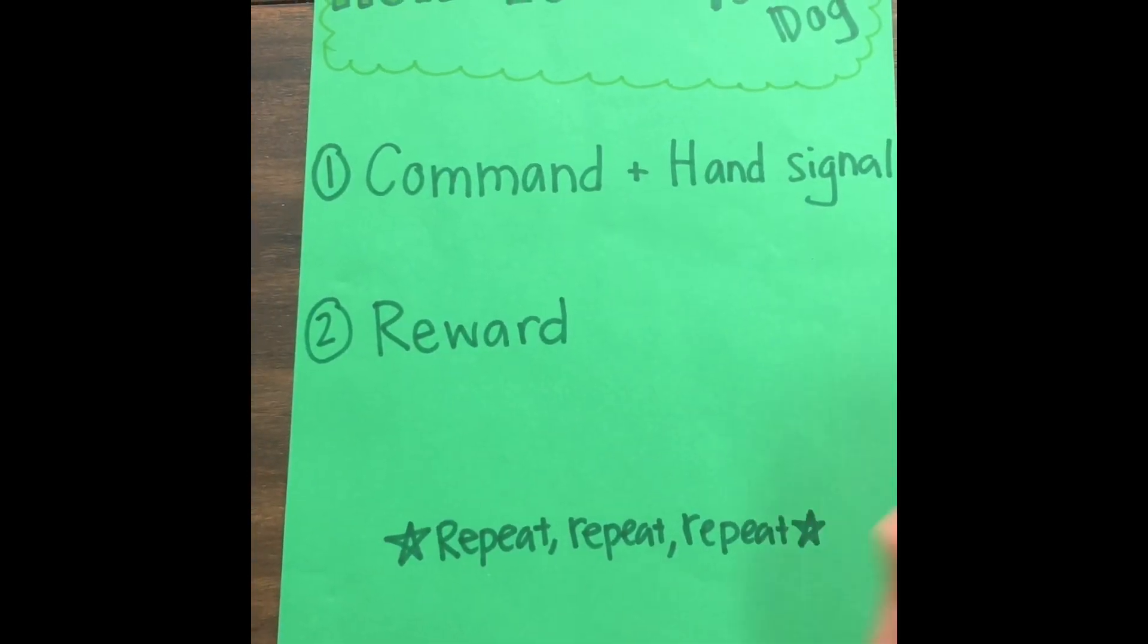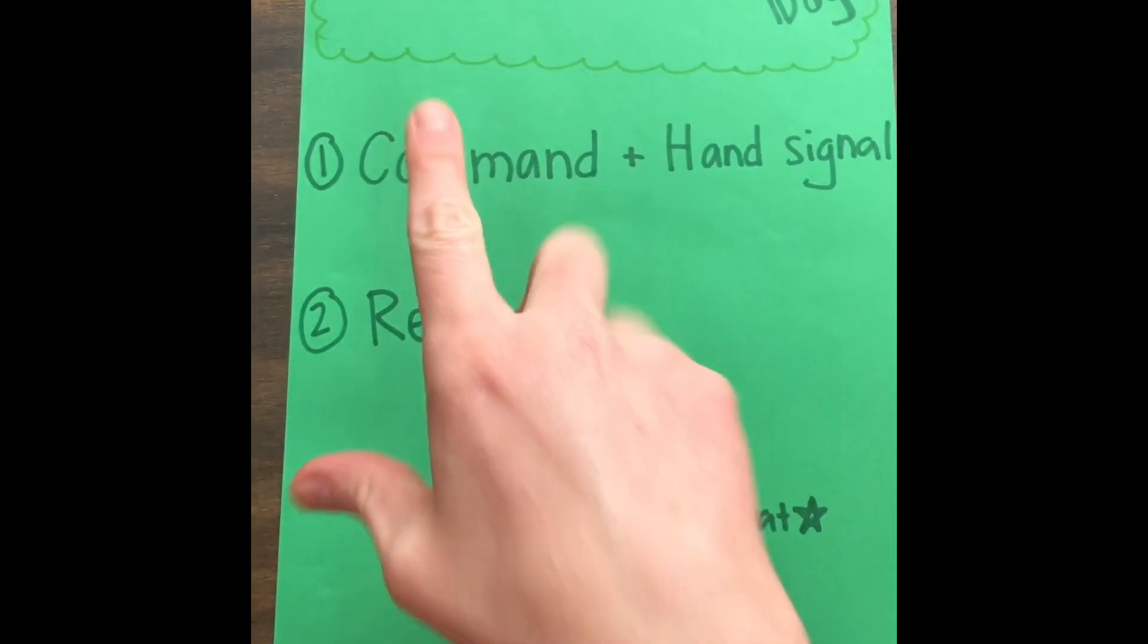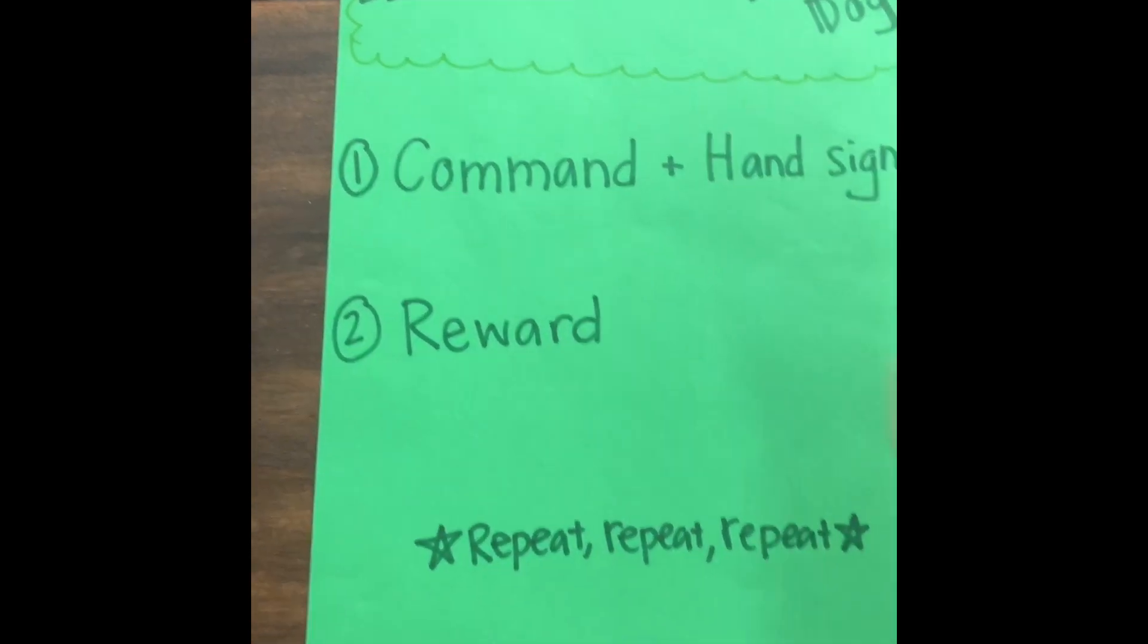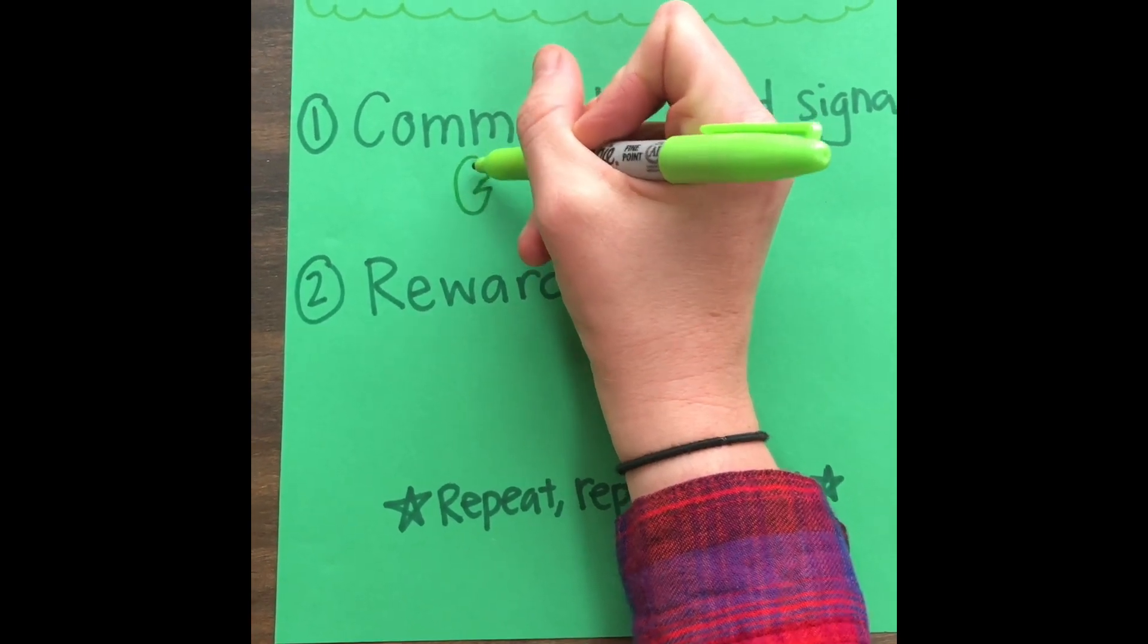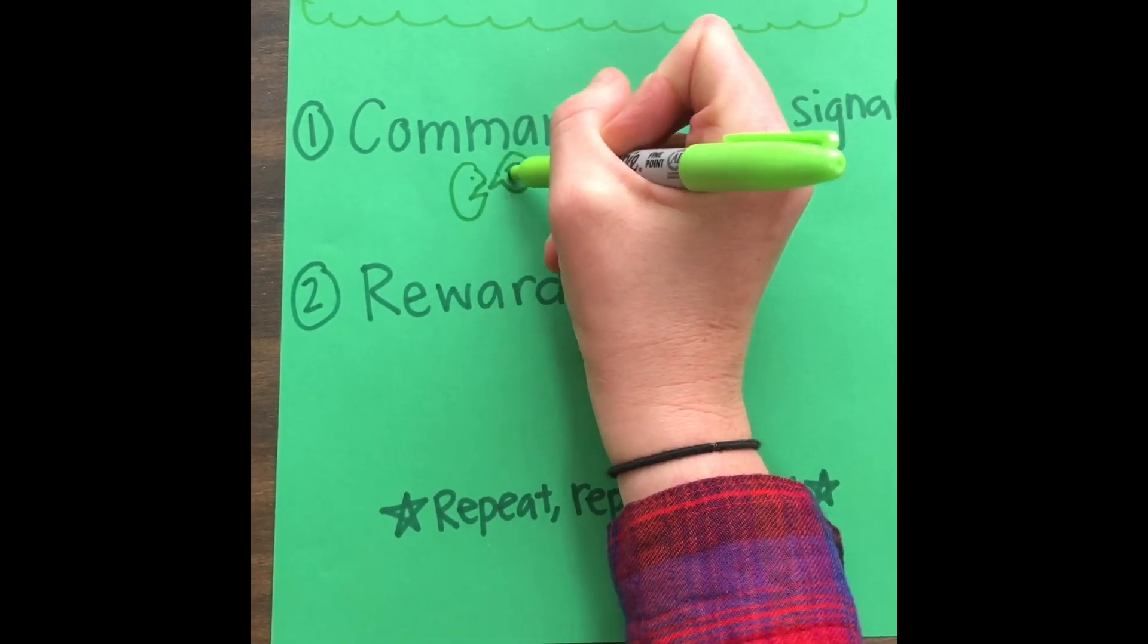Okay, so when you want to train your dog, the steps are: one, you need to give them a command, and by command I mean that you want to make sure you say one word to them that describes the action.